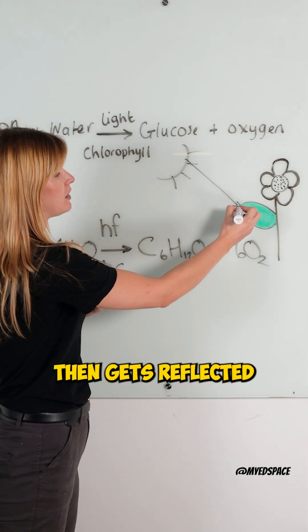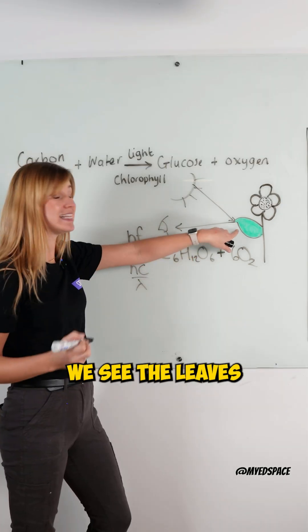And the green part of the spectrum then will get reflected into your eye, and that's why we see the leaves as green.